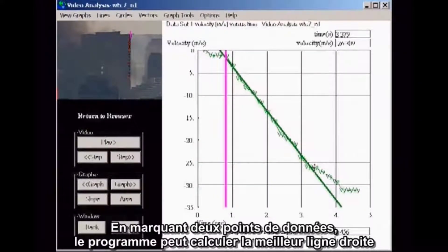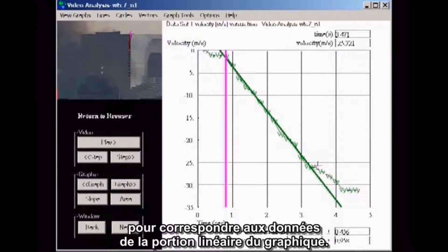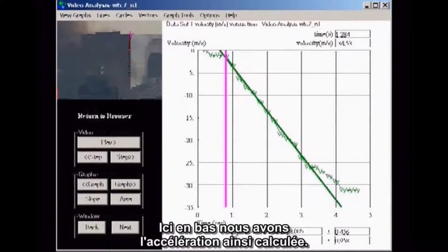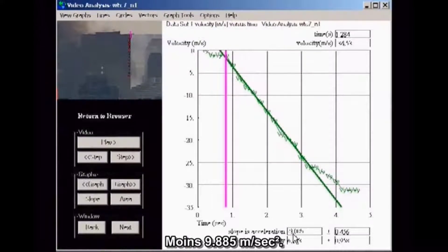By marking two data points, the program can compute the best straight line to fit the data for the linear portion of the graph. The slope of the line is the acceleration. Down here at the bottom, the computed acceleration is shown, minus 9.885 meters per second squared.